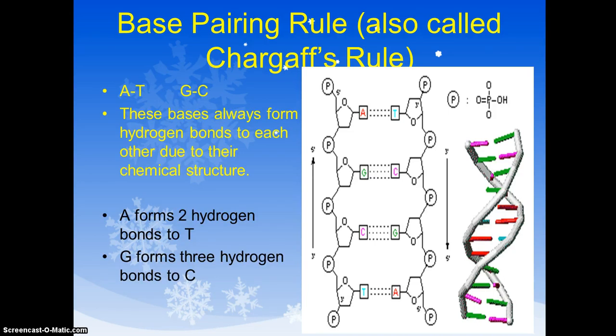It's called the base pairing rule. It can also be called Chargaff's rule. That's the scientist who discovered it. And here's yet a different picture of DNA. And the reason I put this on here is it's kind of highlighting these bonds in between the nitrogenous bases.